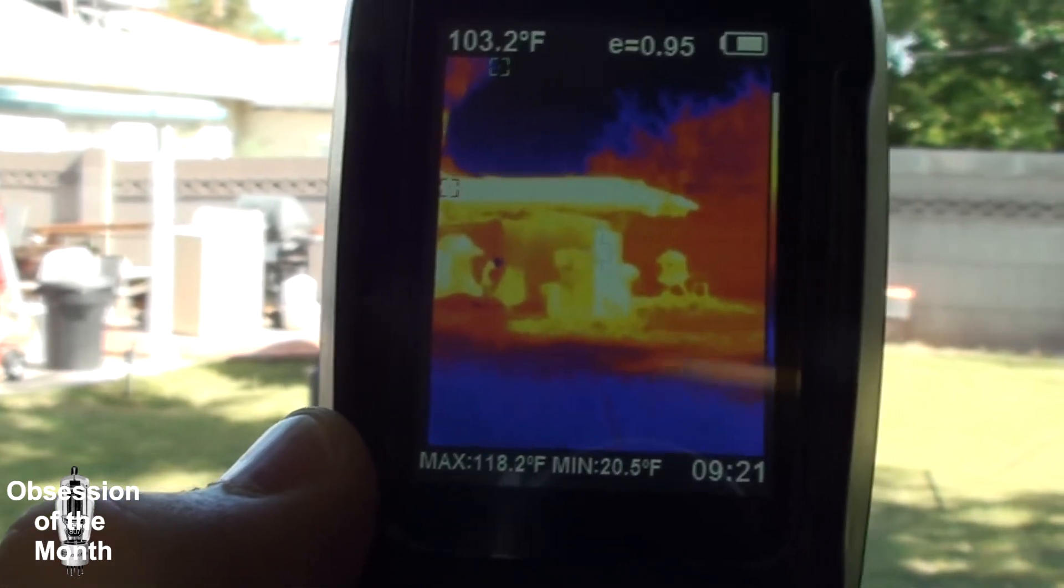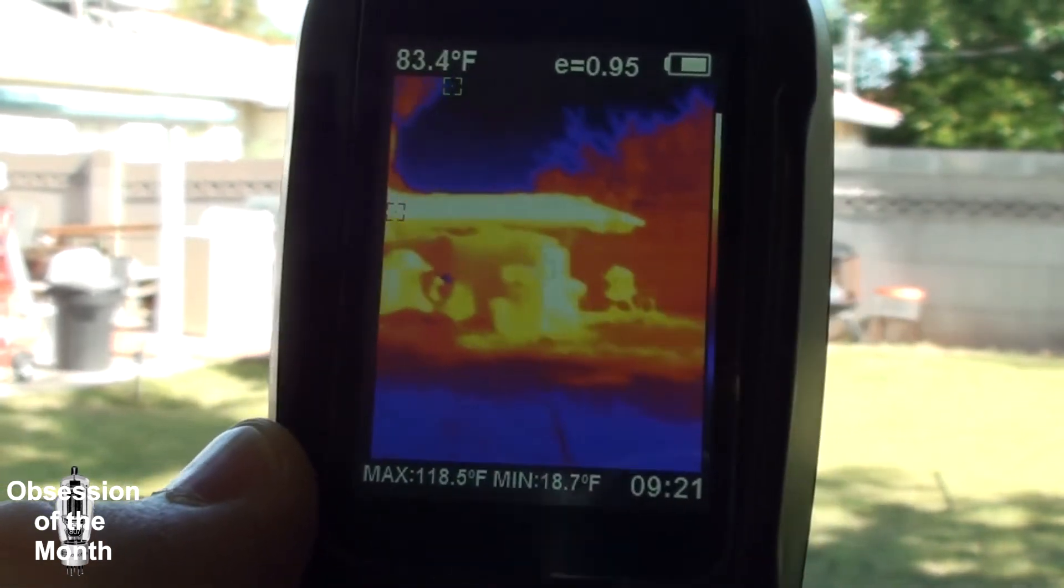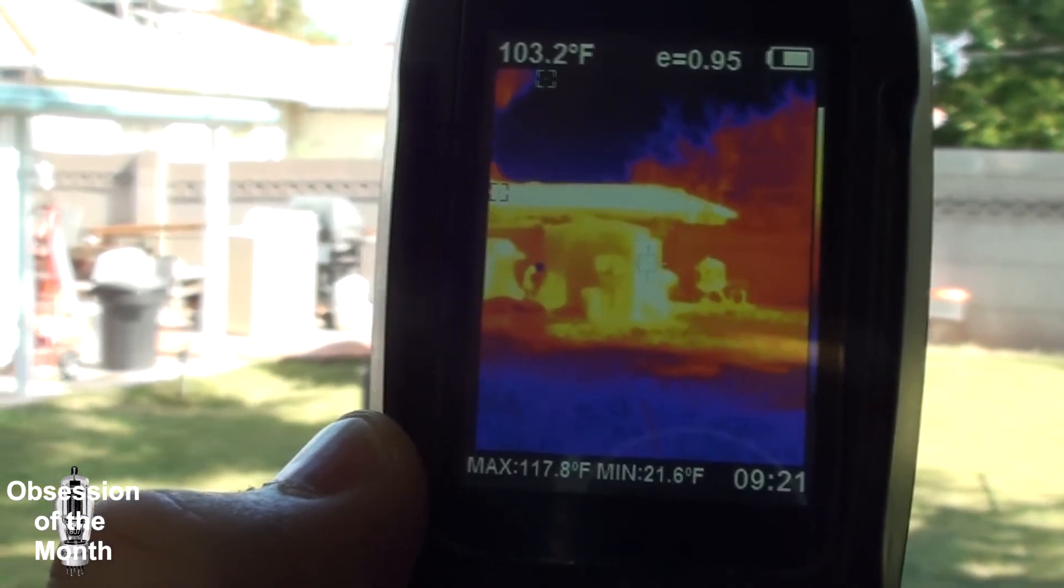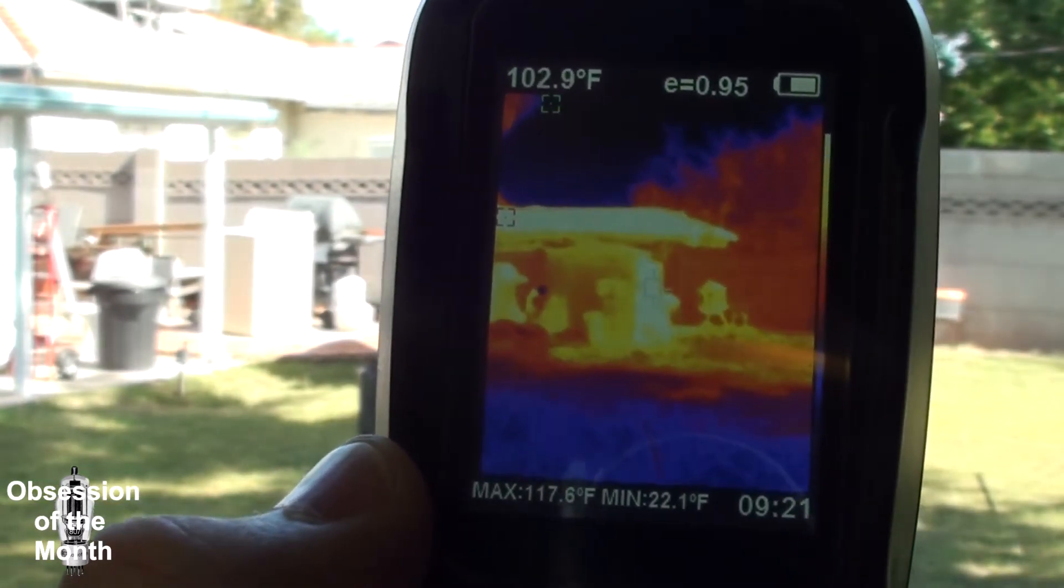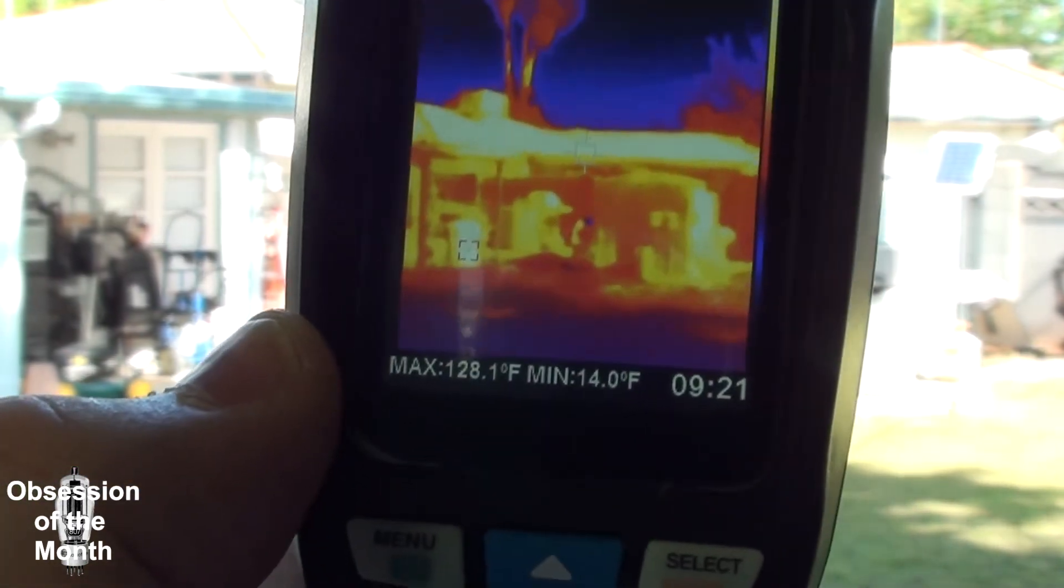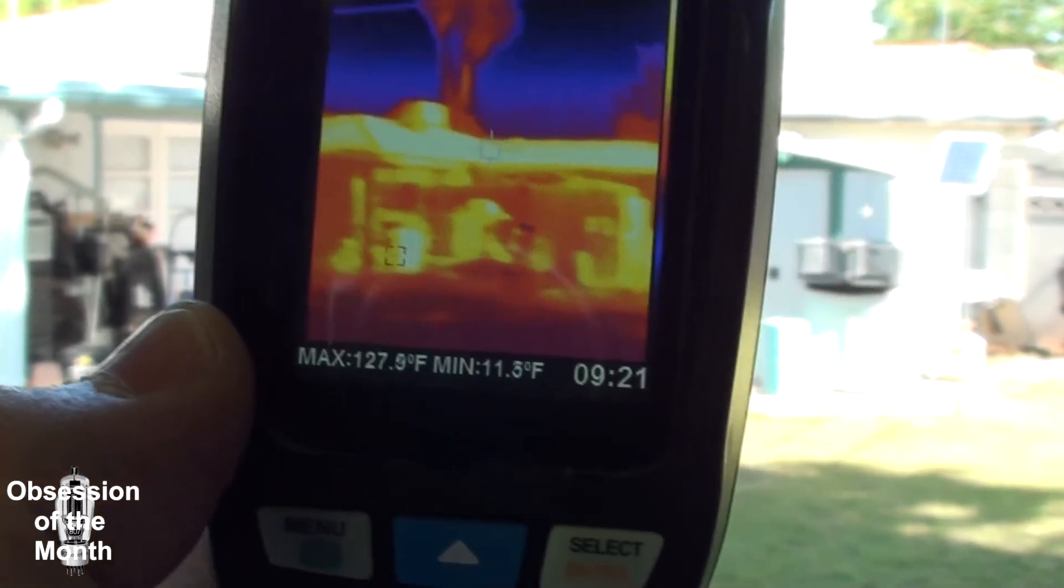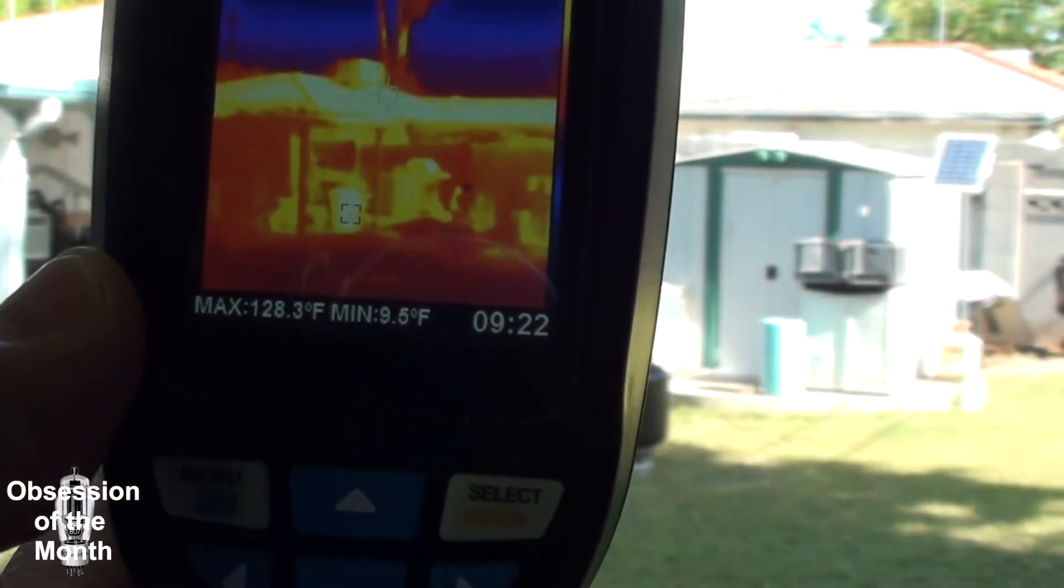And so we're getting a temperature reading on the shed of 103. Shows the hottest is up on the roof, 114.